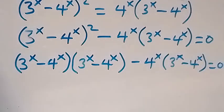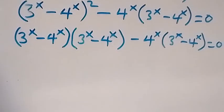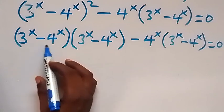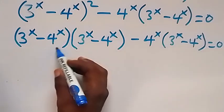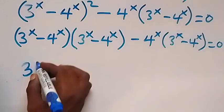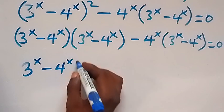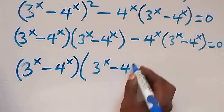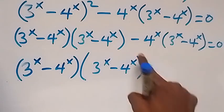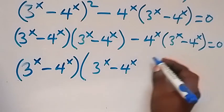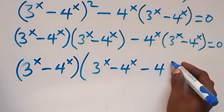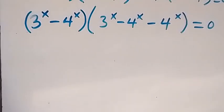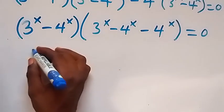From here we have 3 raised to power x minus 4 raised to power x common — we have it here and here — so let's bring it out. We have 3 raised to power x minus 4 raised to power x, out, then into bracket: what is left here is 3 raised to power x minus 4 raised to power x, then minus 4 raised to power x, which equals to zero.